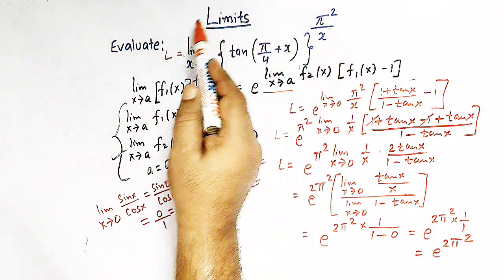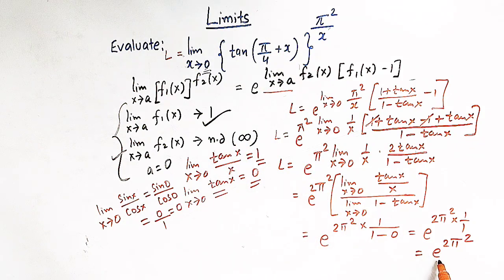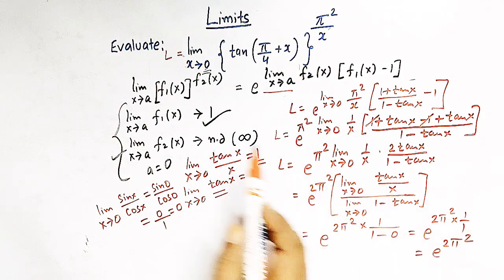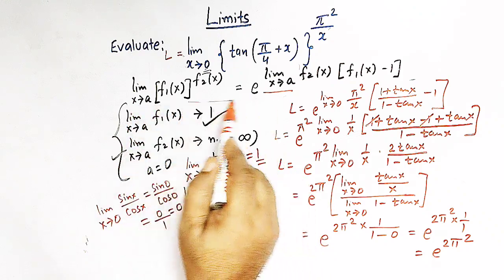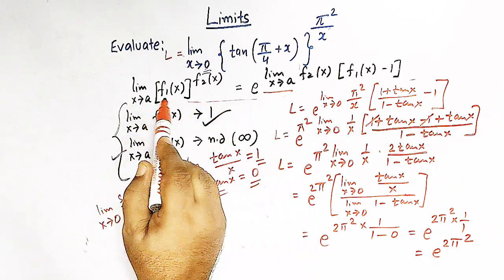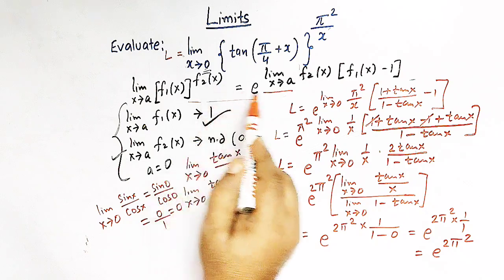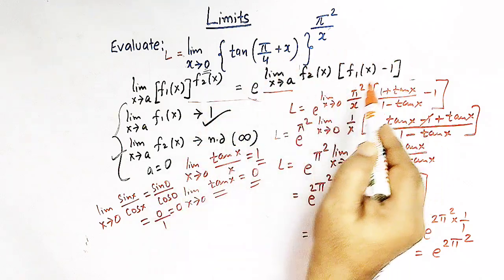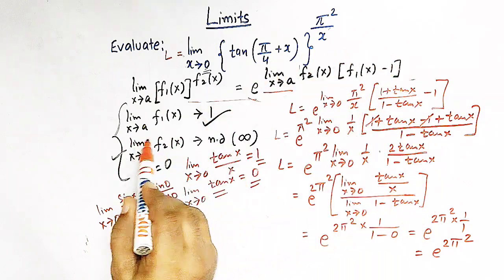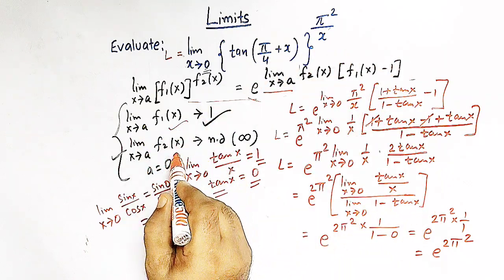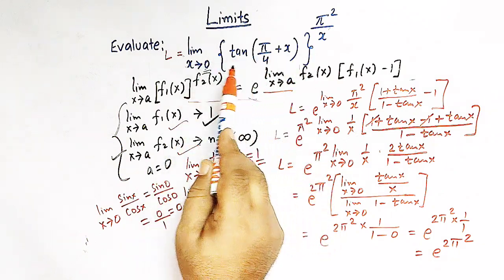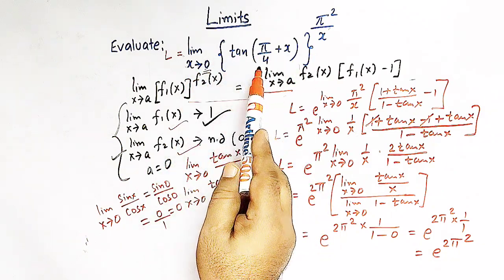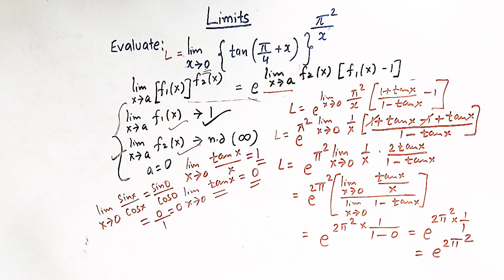So the value of this limit is e raised to 2π². We have seen that by using this result — limit x tends to a of f1(x) raised to f2(x) equals e raised to limit of f2(x)·(f1(x)−1), provided the two conditions are satisfied — we can easily find the values of these kinds of limits.